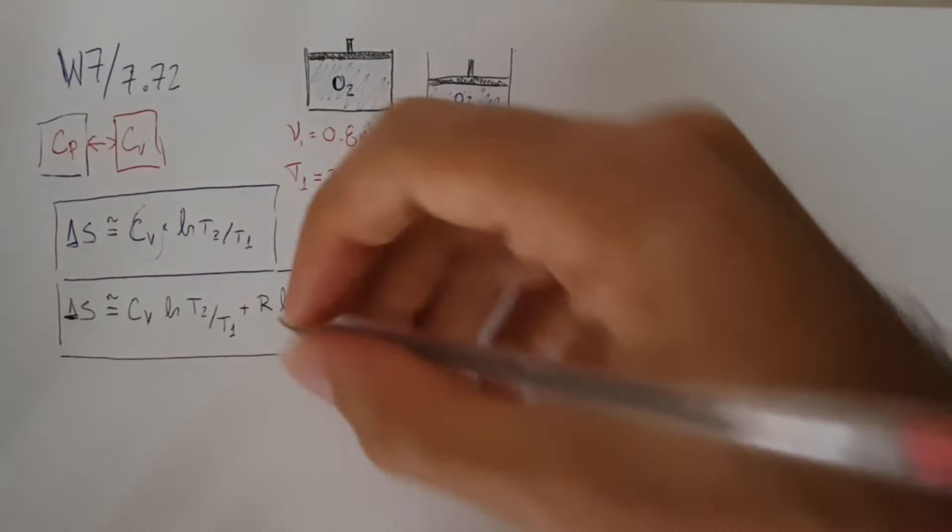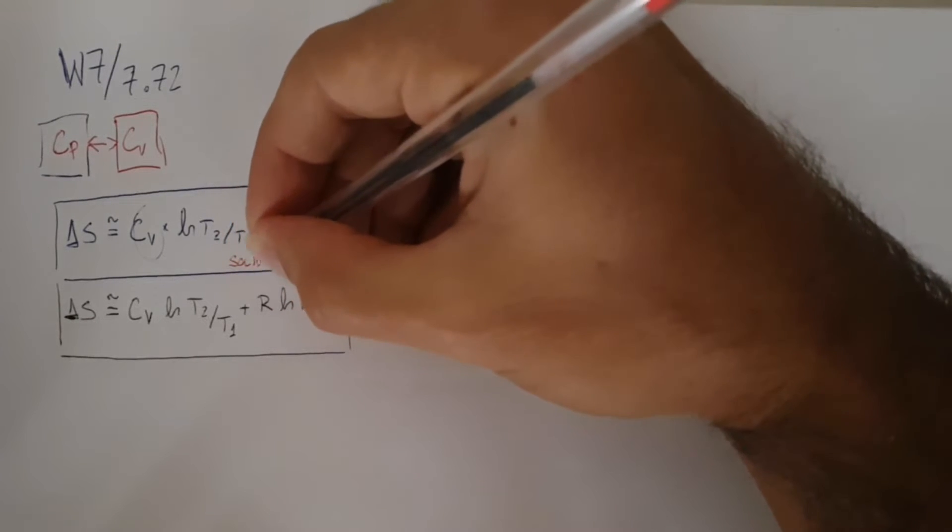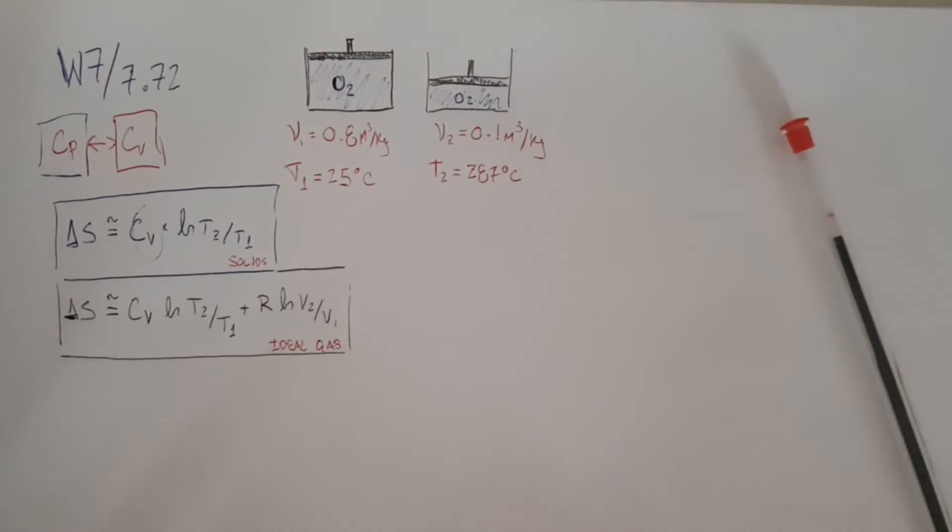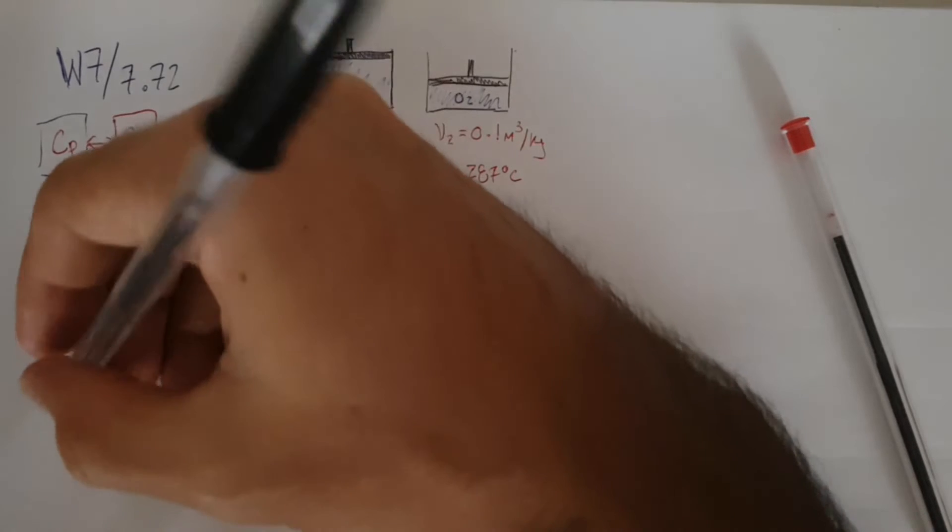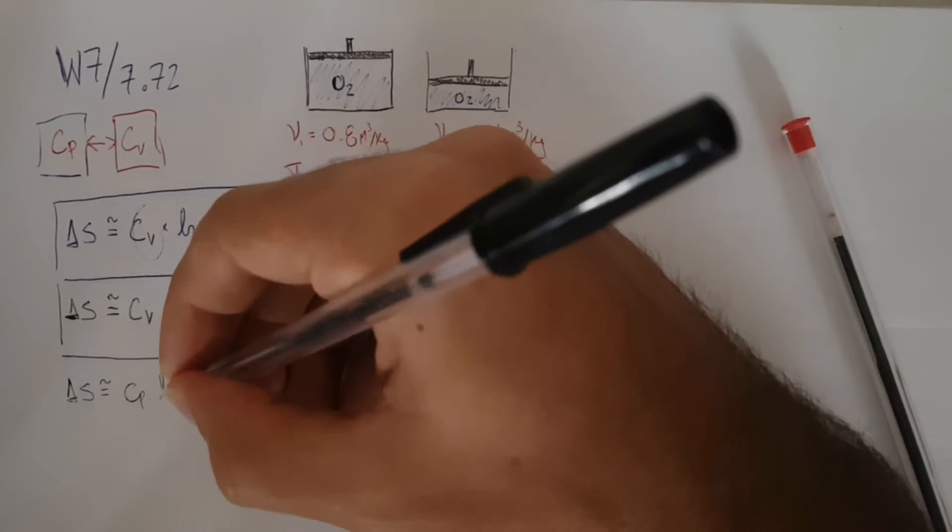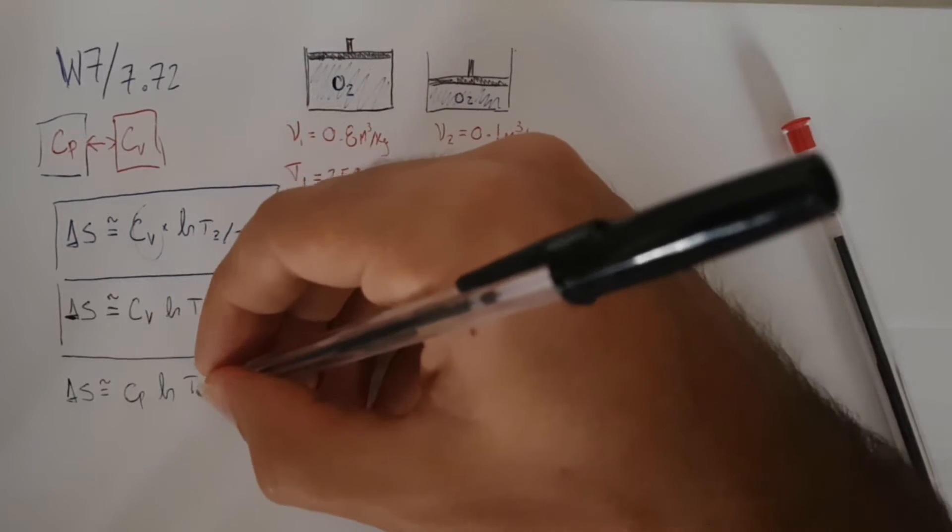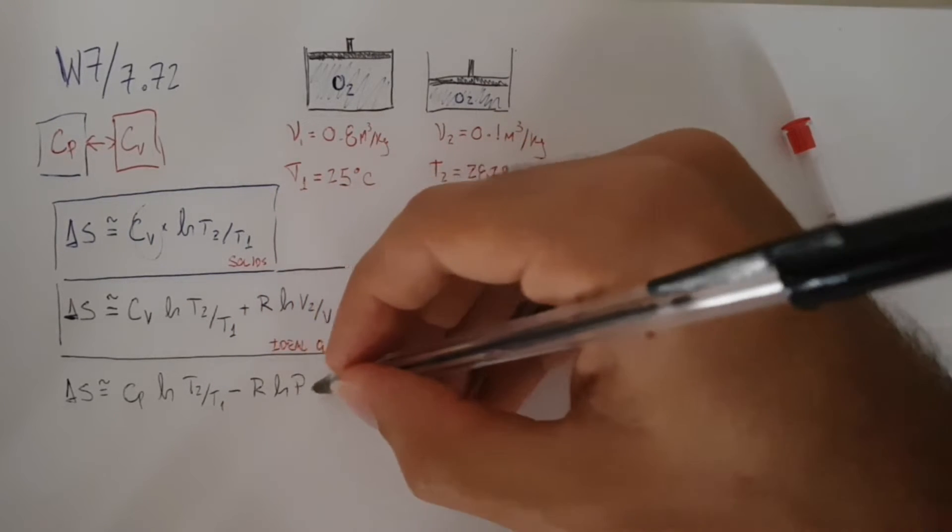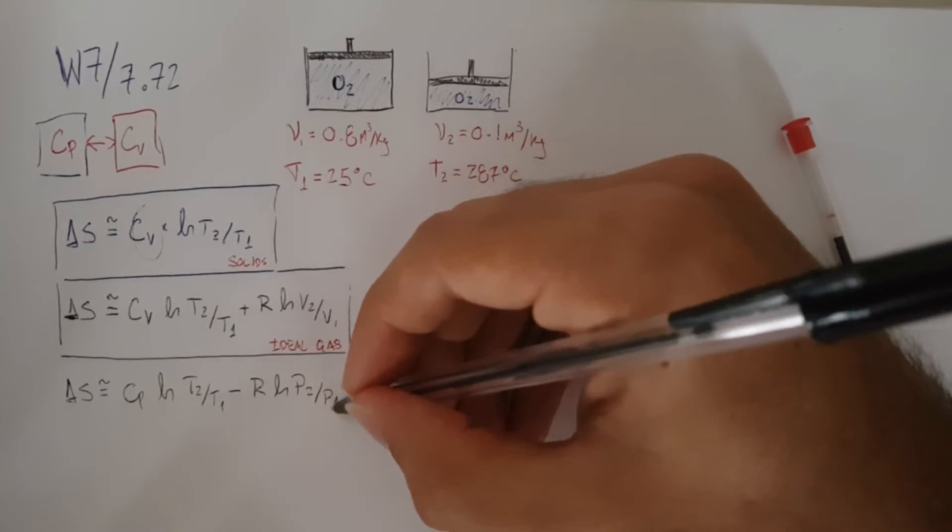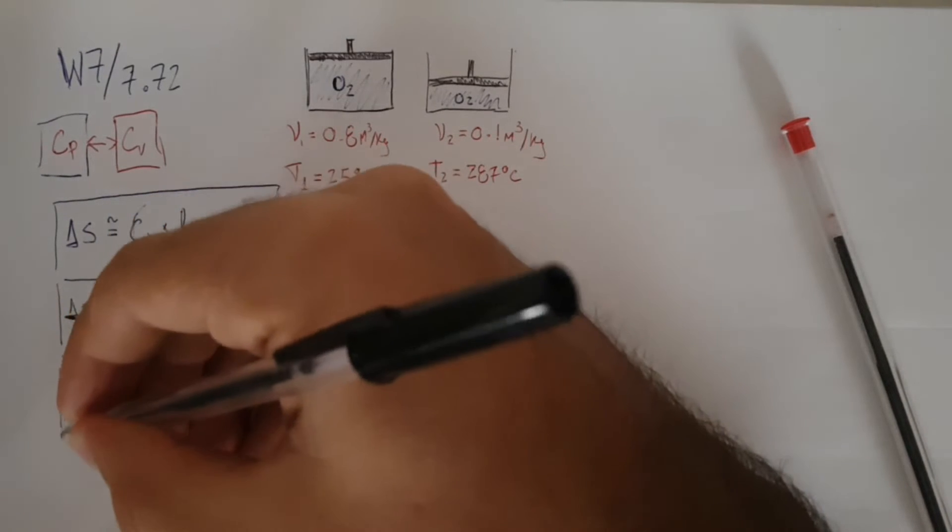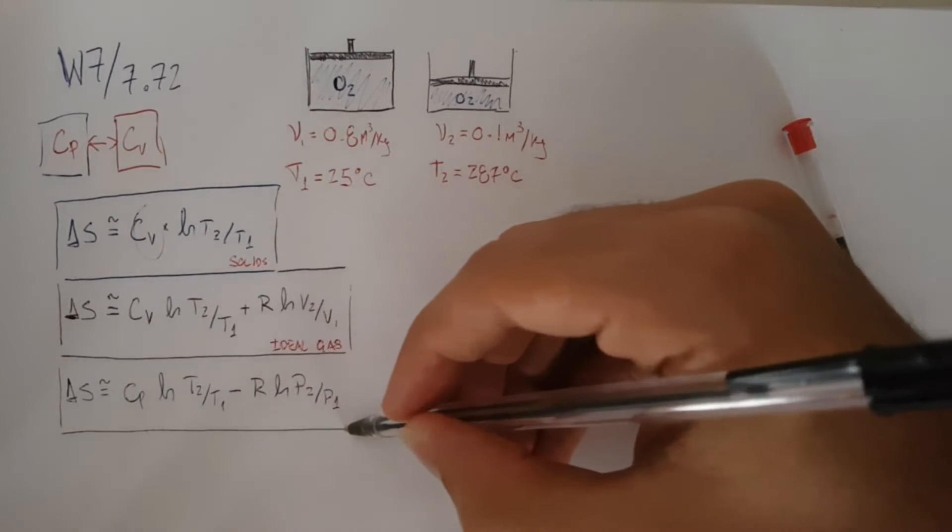If we use our relationship between temperature, volume, and pressure for an ideal gas, we can convert this equation into CP instead of CV. So it's CP average natural log T2 over T1, minus R natural log of P2 over P1.